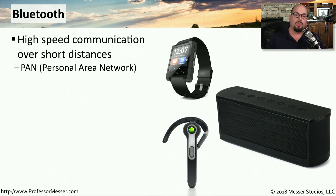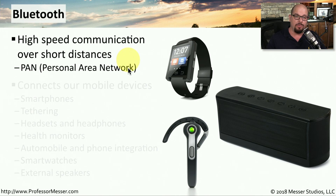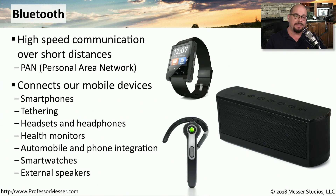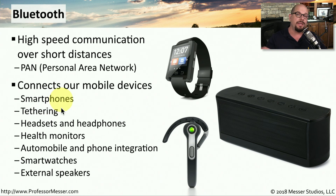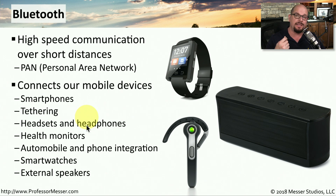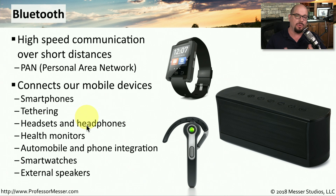For higher speed and more persistent connections from our mobile devices, we might use a Bluetooth connection. We sometimes refer to Bluetooth as a PAN, or personal area network. Bluetooth is used for many different mobile device connections — we might use it to tether our smartphone as a mobile access point, use headphones or headsets wirelessly, or connect health monitors or speakers so that we can communicate and send data to these devices without any wires.